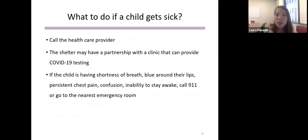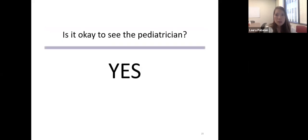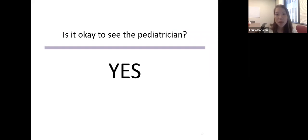If a child gets sick, call your healthcare provider. Some shelters may have partnerships with clinics that provide COVID-19 testing. Call 911 if the child has shortness of breath, blue coloring around the lips, persistent chest pain, confusion, or inability to stay awake. It is absolutely okay to see the pediatrician — all clinics have instituted safety procedures to limit COVID-19 exposure, and the pandemic should not delay any routine or urgent care. The Academy of Pediatrics recommends continuing to receive routine vaccinations during the pandemic.